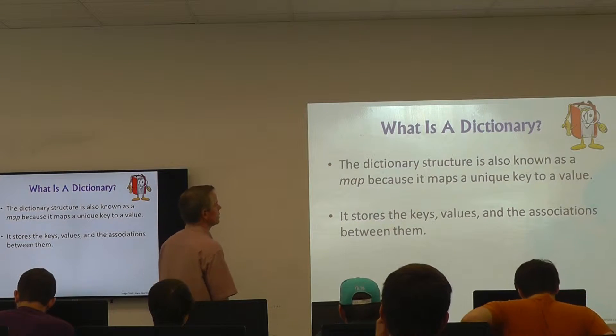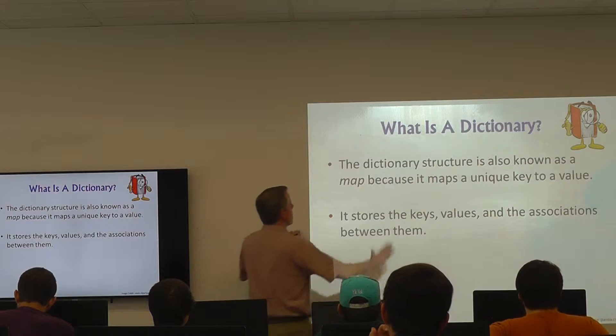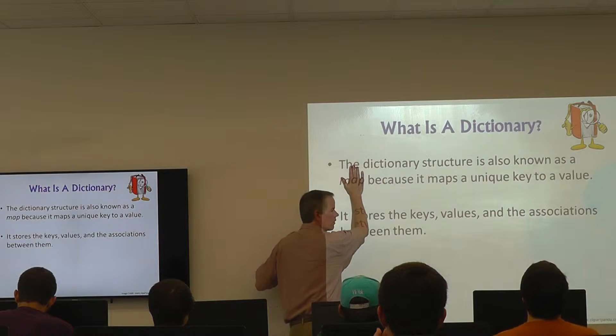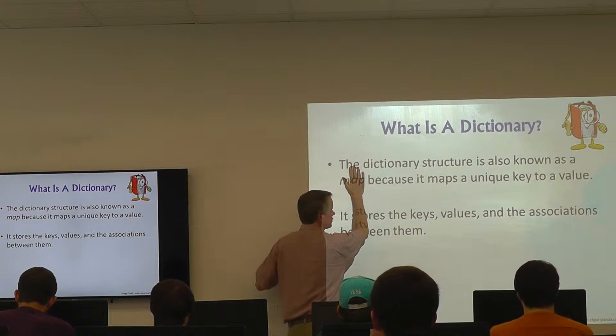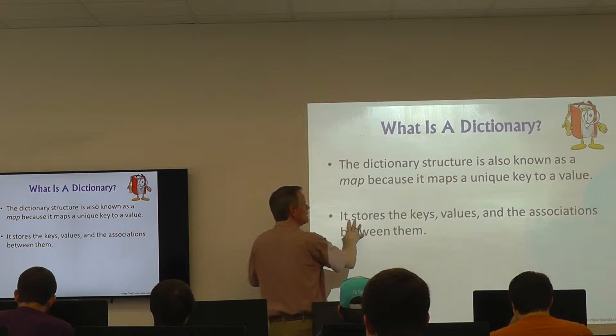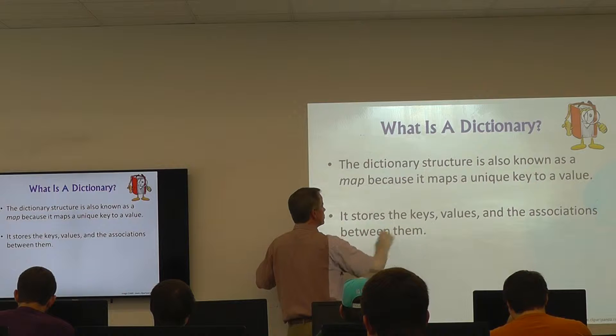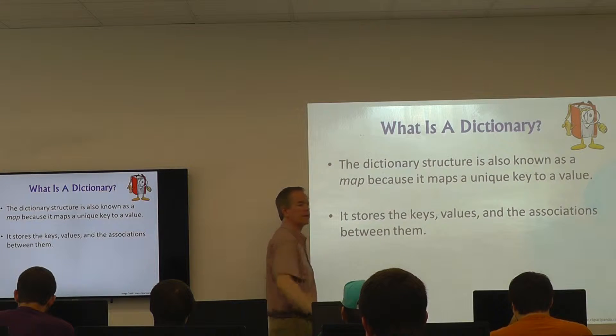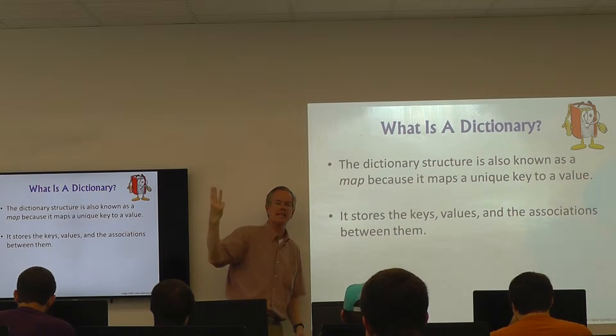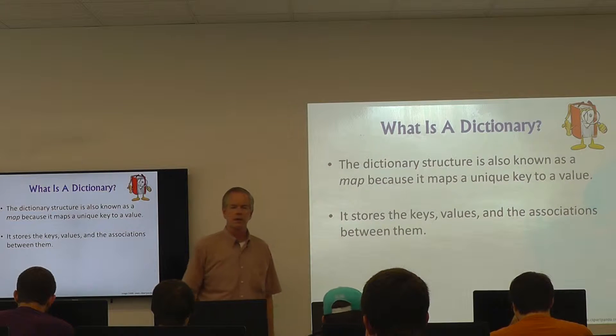Dictionary structure is also known as a map for very obvious reasons. It stores the keys, the values, and the associations between them — so three things are stored.